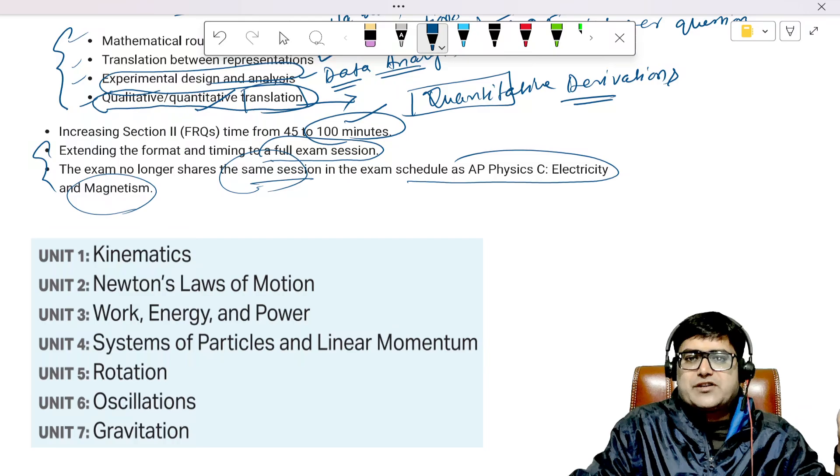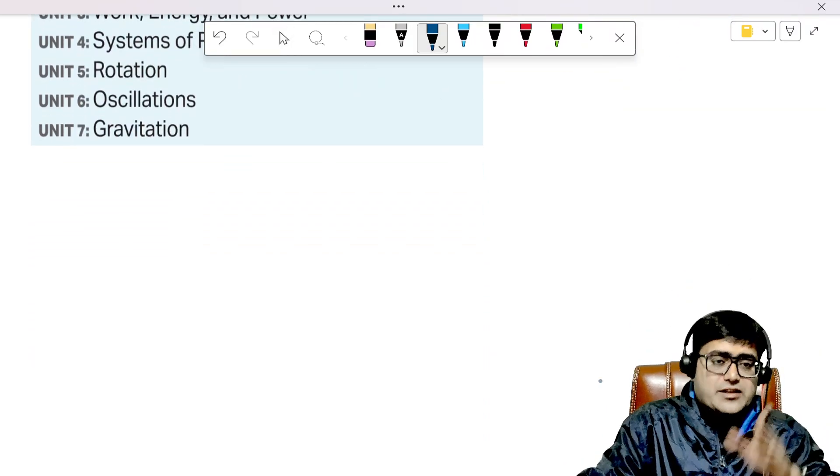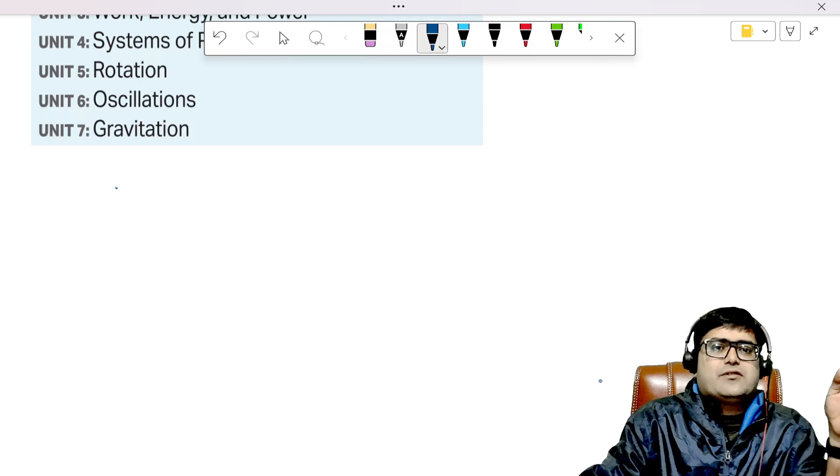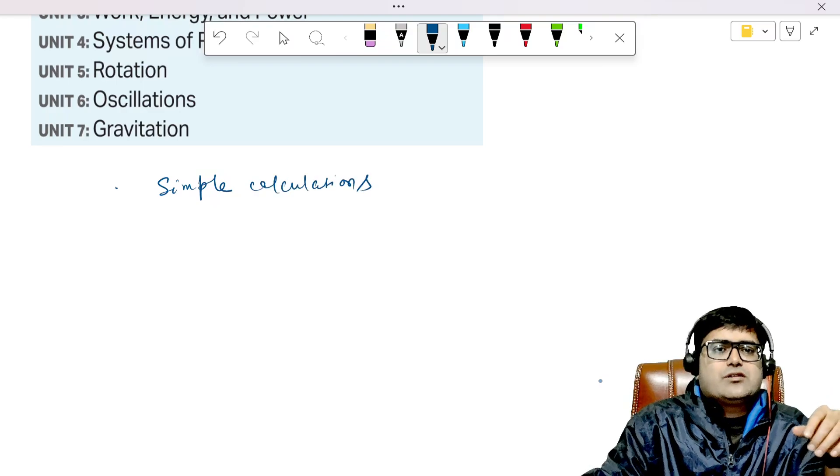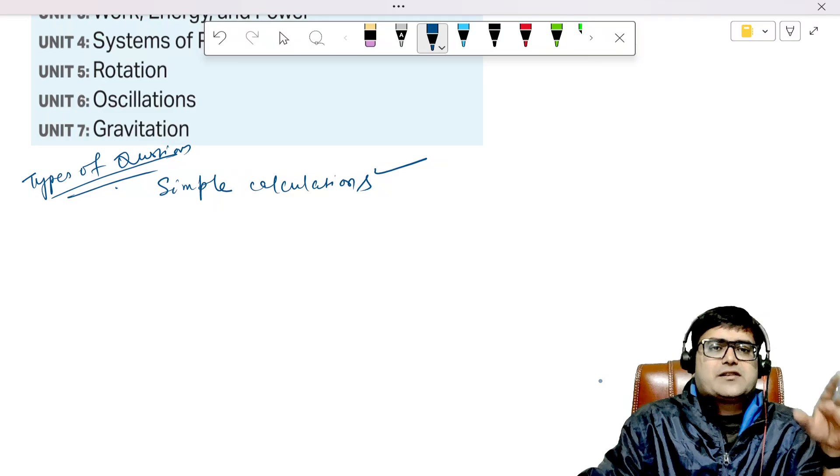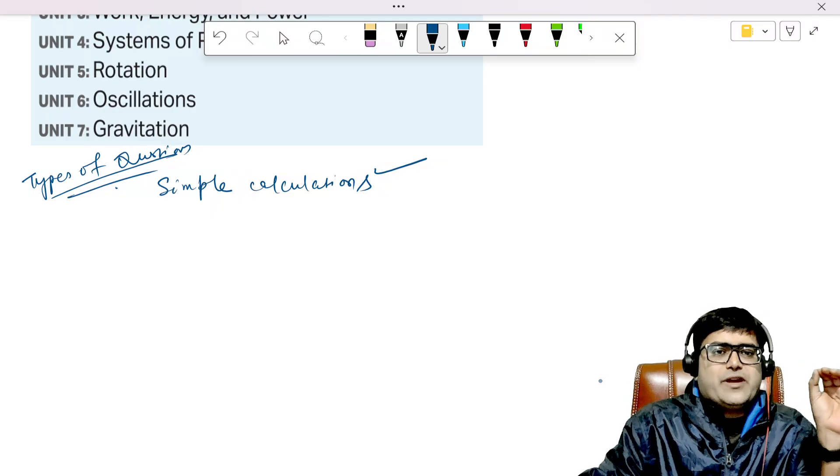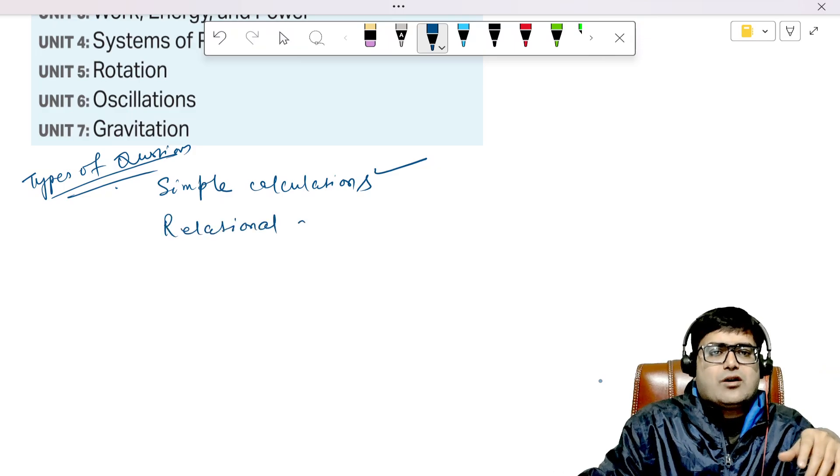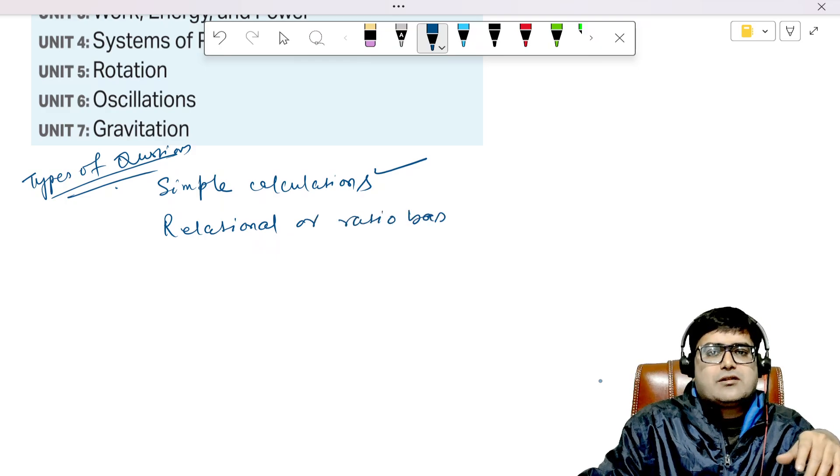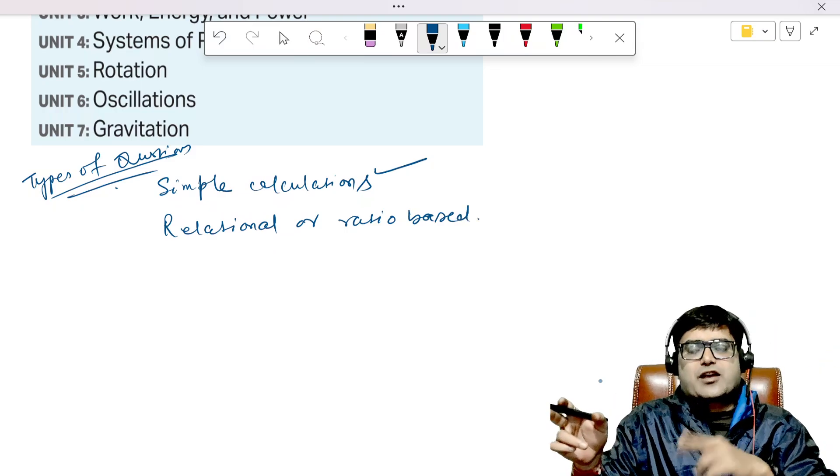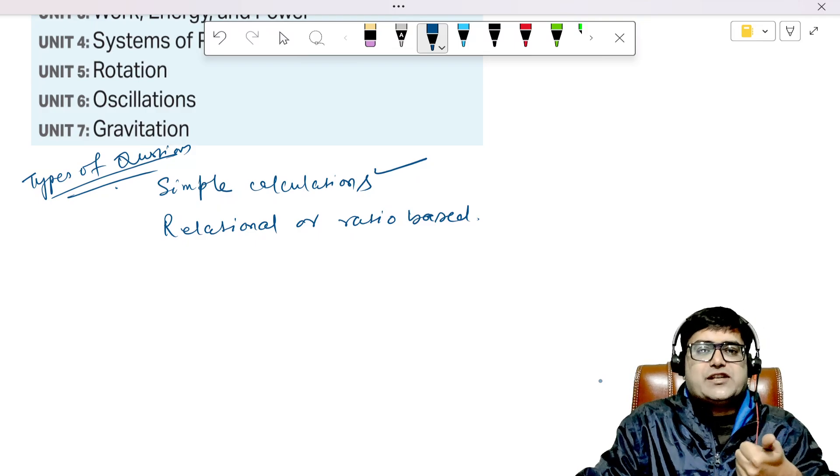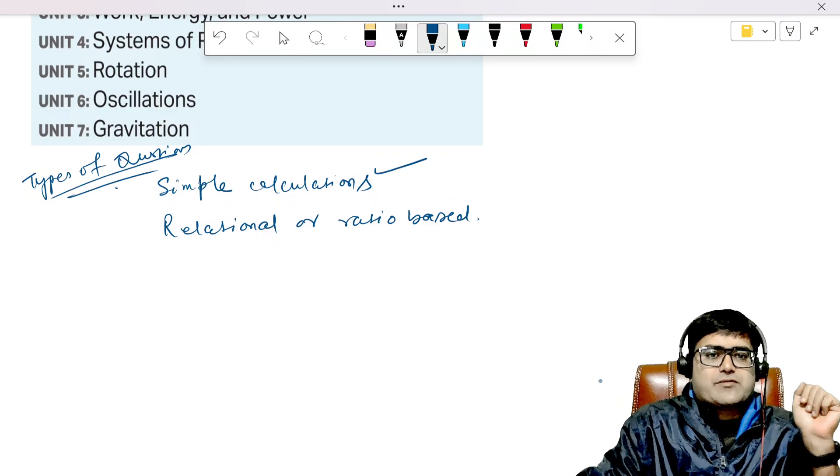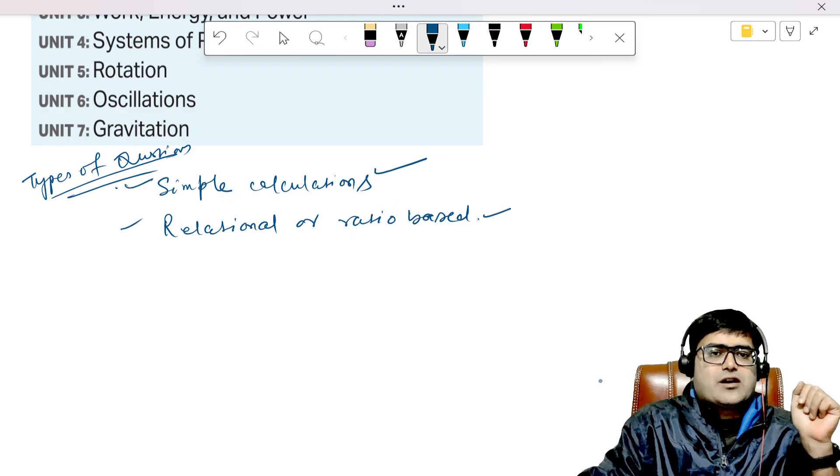There are a lot of other questions also. First you have simple calculations, simple calculations means again formula-based you can say. And there would be relational or ratio-based questions. That means if one quantity depends on the other and the previous quantity changes by certain amount, then how would the other quantity or dependent quantity will change and what value will it acquire. Relational ratio-based questions, these are the most important questions in MCQs.